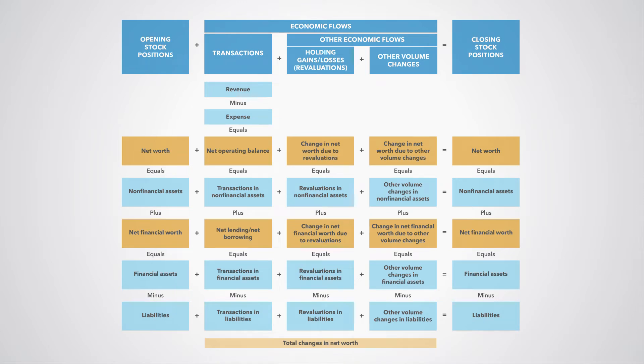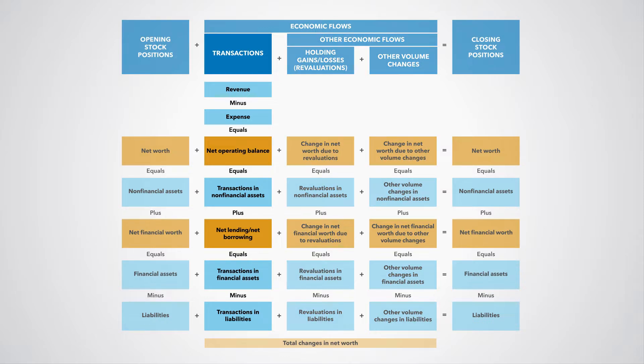First, let us assume government receives taxes of 100 in the form of cash. The first question we have to ask is whether this is a transaction or an other economic flow. You would agree with me that the payment of taxes are transactions. Now we have to ask whether this transaction increases or decreases government's net worth or leaves it unchanged. Government is receiving cash that it did not have before, so we can say for sure that this is a revenue,